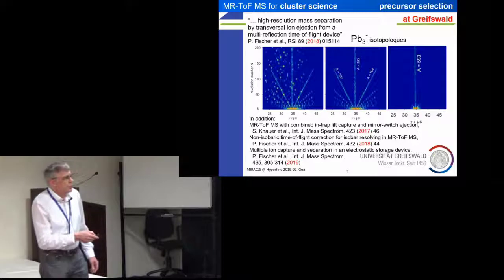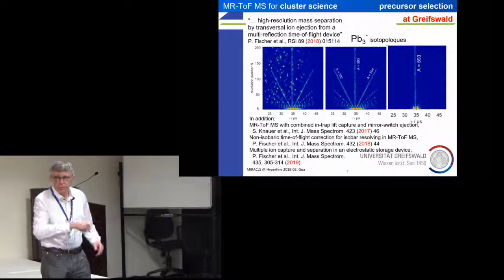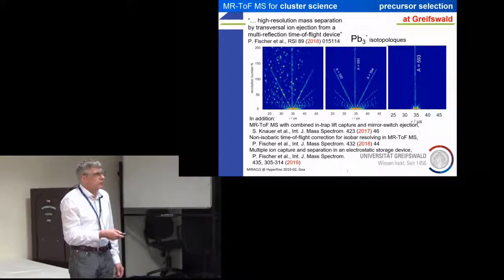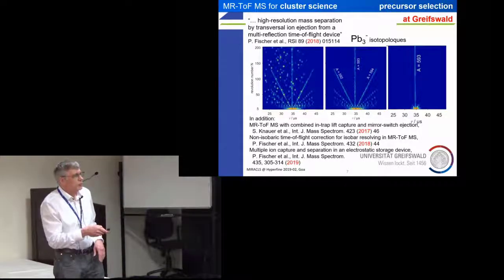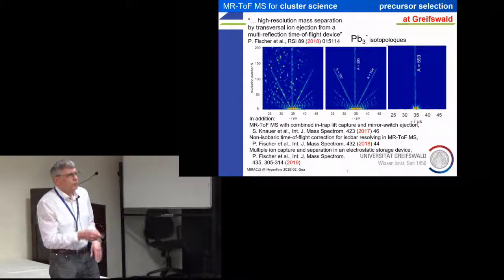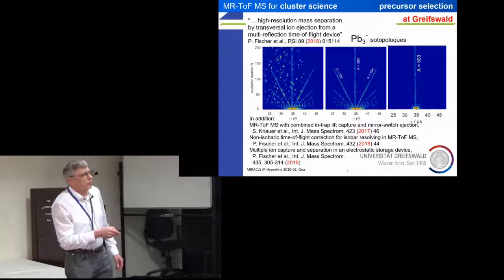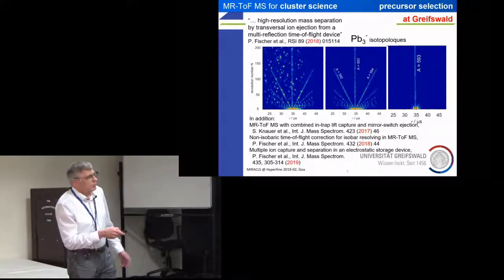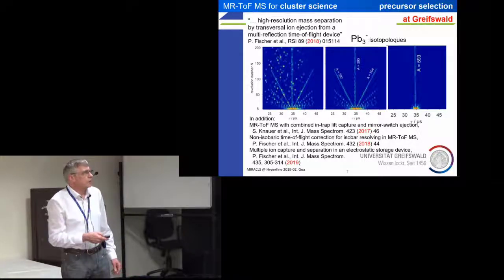Here you just see how they are distributed in time, but you can actually throw out all the other clusters because they go different number of cycles. They then come simultaneously, but you can get rid of all of them. And you can also separate just one of these isotopologues.